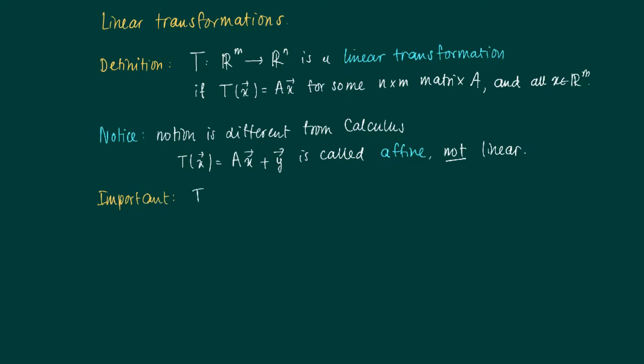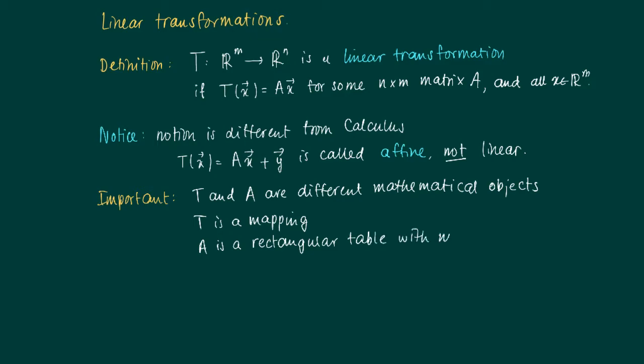So what is also important here is to stress that T and A are different mathematical objects. T is truly a mapping, that is some tool from which we create out of a vector in Rm a new vector in Rn. And A is a rectangular, no more than a rectangular table with numbers. A is a matrix which can be considered in itself doing nothing.